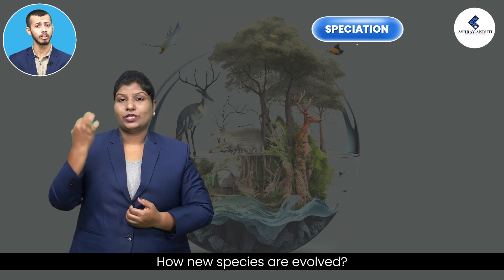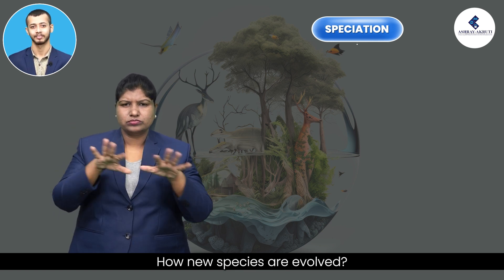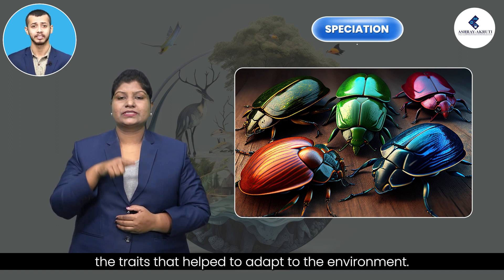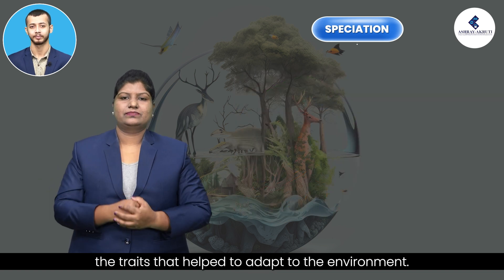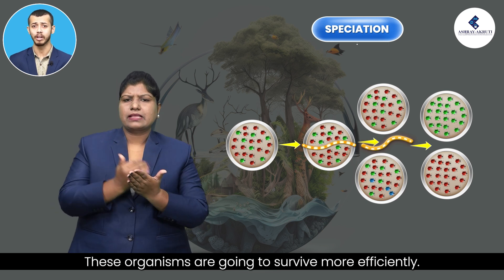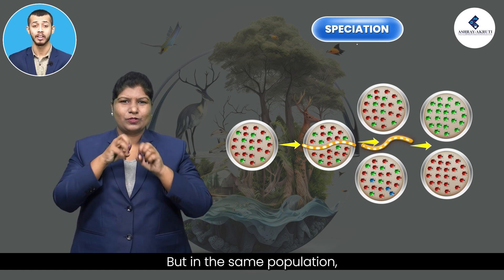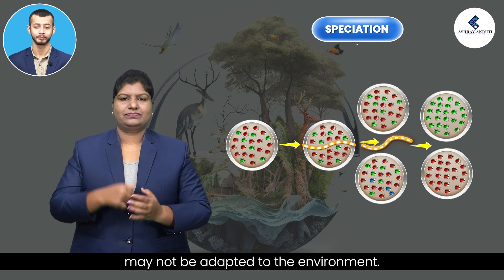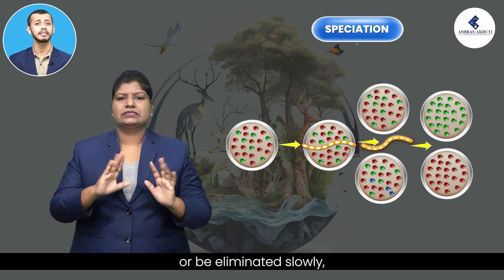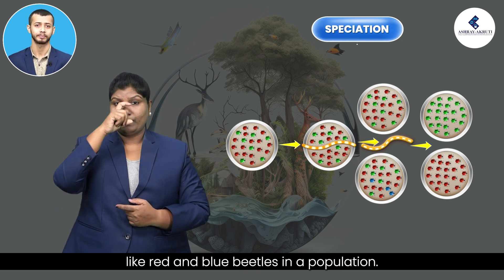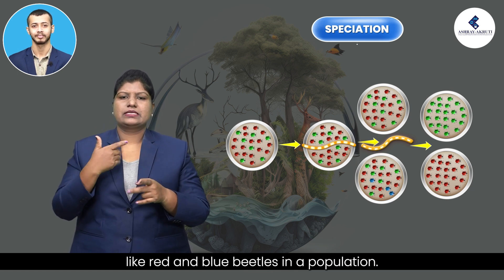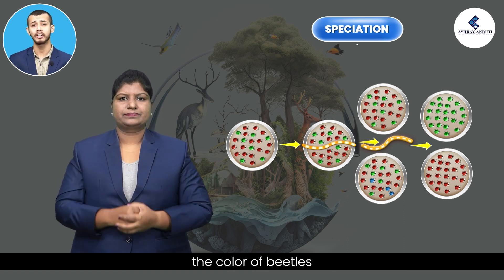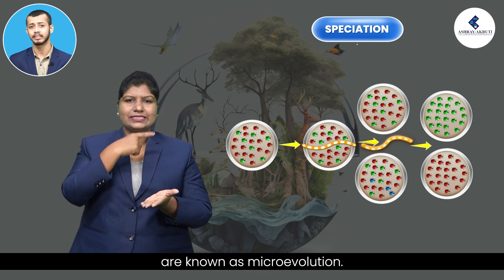How are new species evolved? Some variations in a population are traits that help organisms adapt to the environment, and those organisms survive more efficiently. But organisms with non-beneficial traits may not adapt and will perish or be eliminated slowly, like the red and blue beetles in a population. These small changes within a species — for example, the colour of beetles changing from red to green — are known as microevolution.